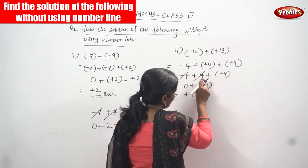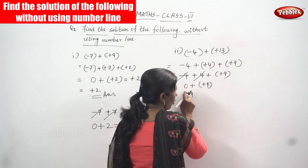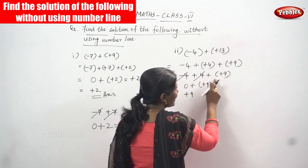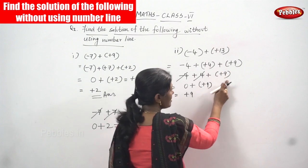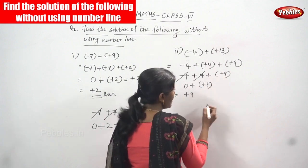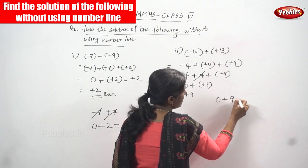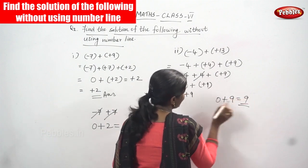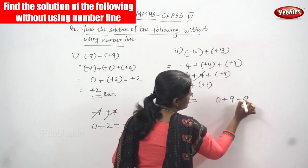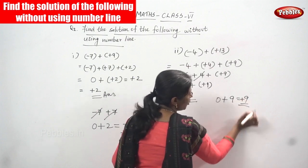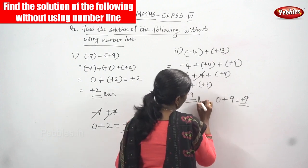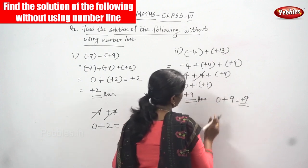So minus four and plus four, if you cancel, you get zero. Then zero plus, and within the bracket you write plus nine. Plus into plus gives only plus. So zero plus nine equals nine, and that nine is a positive nine — you have to put the positive sign. So plus nine is the right answer for this question.